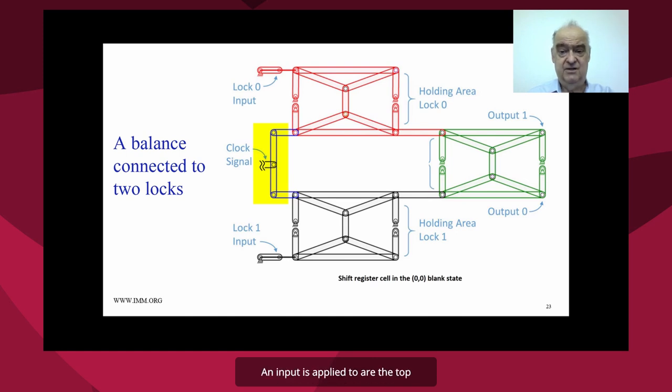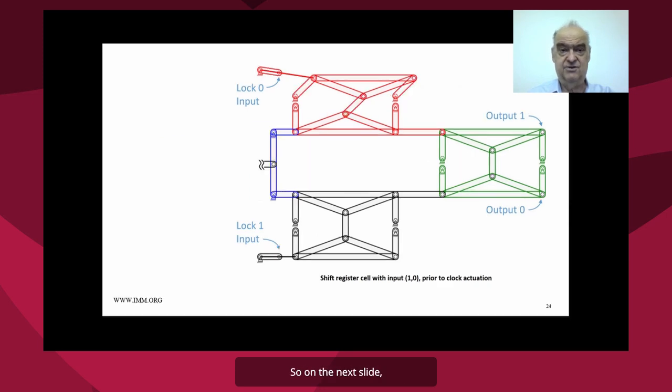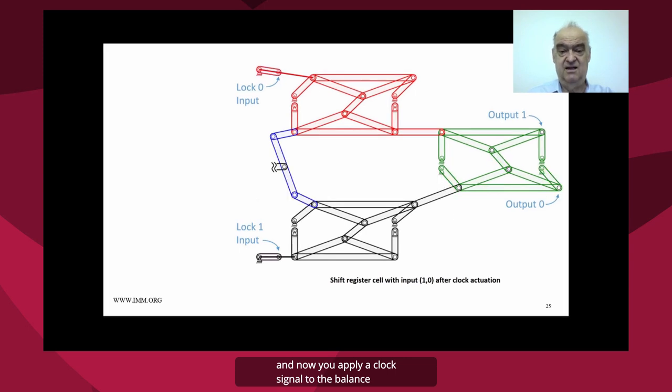An input is applied to either the top or the bottom holding lock. So on the next slide, you see an input has been applied to the upper holding lock. And if you apply that input to the upper holding lock, and now you apply a clock signal to the balance,